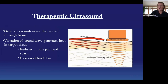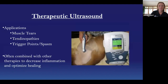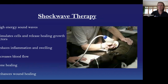Therapeutic ultrasound uses sound waves and vibration to help reduce pain and inflammation. It also increases blood flow like the laser. However, it actually improves collagen organization — something we'll use specifically in tendon injuries to help realign those collagen fibers and improve the tendon's ability to heal. We use this in muscle tears, tendinopathies, and for trigger points and spasm. I often use this in combination with laser or other modalities — it's definitely one of my go-tos for soft tissue.